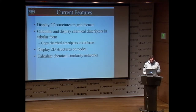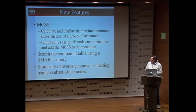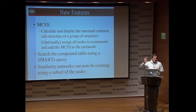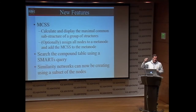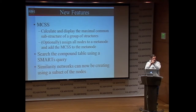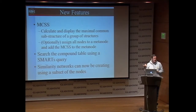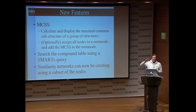What have I been working on? We've added the maximal common substructure capability. If I select a group of nodes and say show me the maximum common substructure, there's now the ability to calculate that. Optionally, I can create a MetaNode, collapse that group into the MetaNode, and affix the maximal common substructure as the SMILES string on the MetaNode. That gives a way to summarize dense networks with a series of MetaNodes. You can now also search the compound table using SMARTS, and you can select a small set of nodes and create a new similarity network with just those nodes.